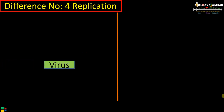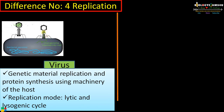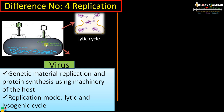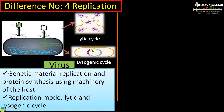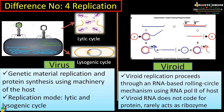Difference number four regards replication. The genetic material of a virus replicates inside the host using the host's machinery. The replication mode can be lytic or lysogenic: the virus injects genetic material into the host cell and hijacks the protein-synthesizing machinery, either causing lysis of the host cell or undergoing a lysogenic cycle where the viral genome integrates with the host genome, forming a prophage, and replicates with the host without causing lysis. Whereas in the case of viroids, replication is by an RNA-based rolling circle mechanism that uses RNA polymerase II of the host.